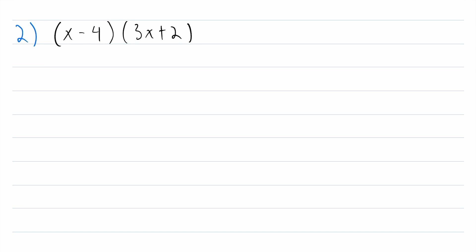Now we've got a similar thing to before — we've got one thing being multiplied by a sum that's in parentheses. But instead of just a number like three or two, we have x minus four being multiplied by this sum in parentheses. That makes it a little messier, but it doesn't change the process at all — we're just going to use the distributive property.